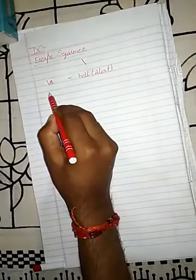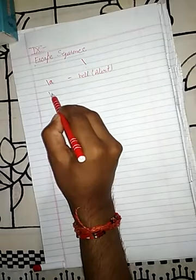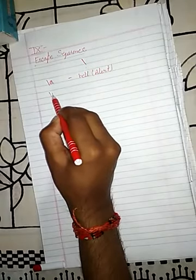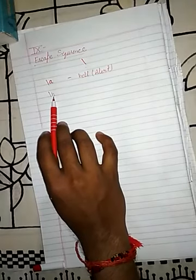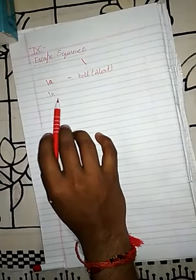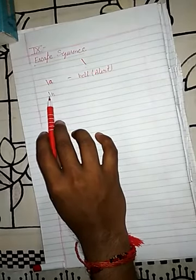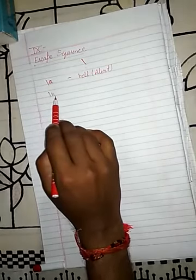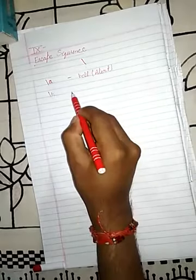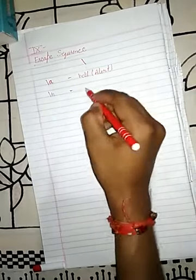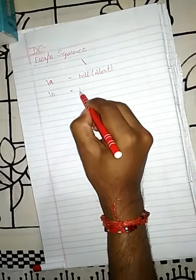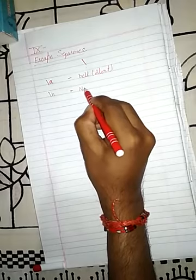Or you can use \n. If you use just n, then this n will be printed in the program. But if you will use \n, this will be a new line.